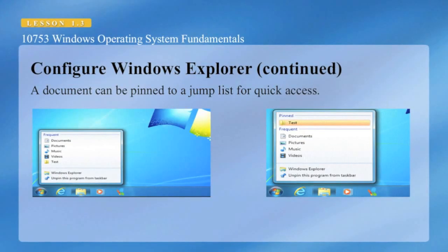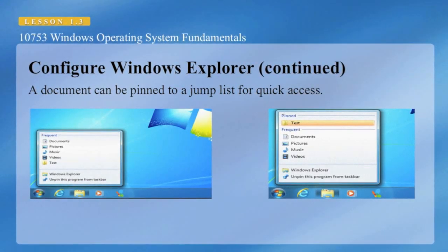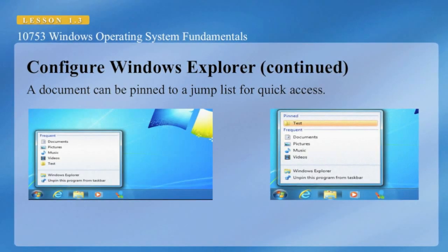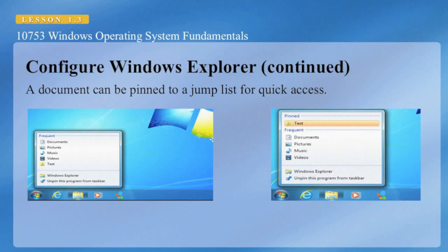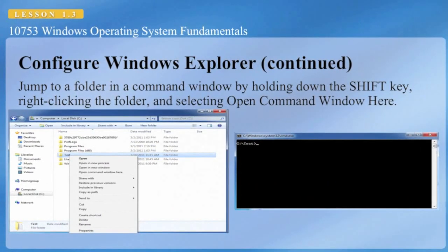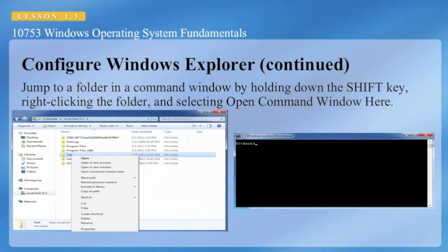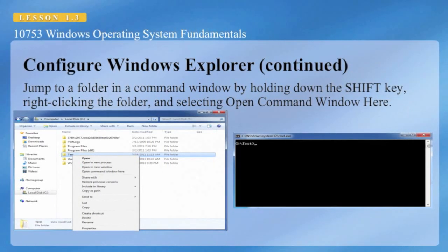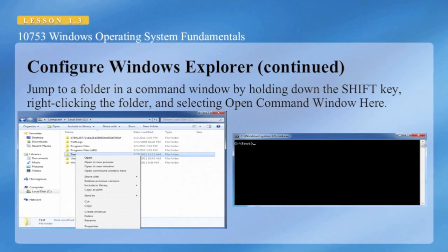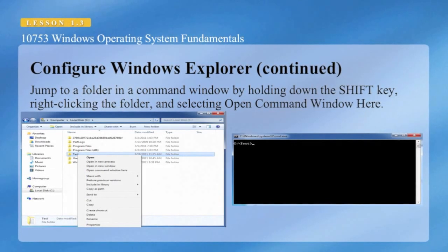To pin a recently used document or folder to a jump list, right-click the Windows Explorer icon on the taskbar. This will display recently used folders and documents. A useful tool is the Open Command Window Here option — you can jump to a folder in a command window by holding down the Shift key, right-clicking on the folder, and selecting Open Command Here. This is very useful when trying to get a command prompt in the current directory.